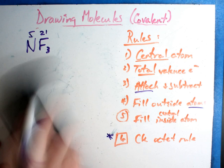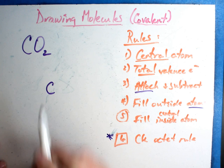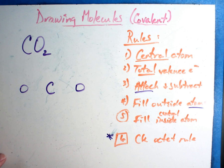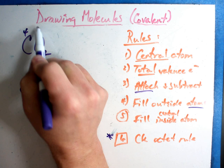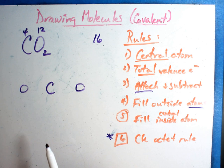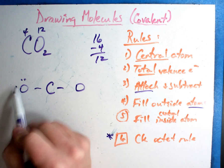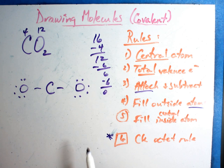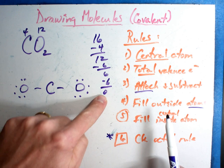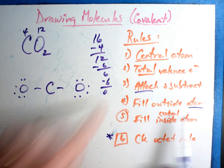Let's try another one - sometimes some weird things happen. Let's look at carbon dioxide. The central atom is carbon. I'll put an oxygen on each side - doesn't matter where I put them. Total valence electrons: carbon has four, oxygen has six and there are two of them, so that's twelve. Grand total is sixteen - very tricky, watch this one. Attach and subtract: two, four - minus four leaves twelve. Fill the outside atoms: each oxygen gets six dots - one through six for each. I'm out, zero. So I have to get zero every time - good.